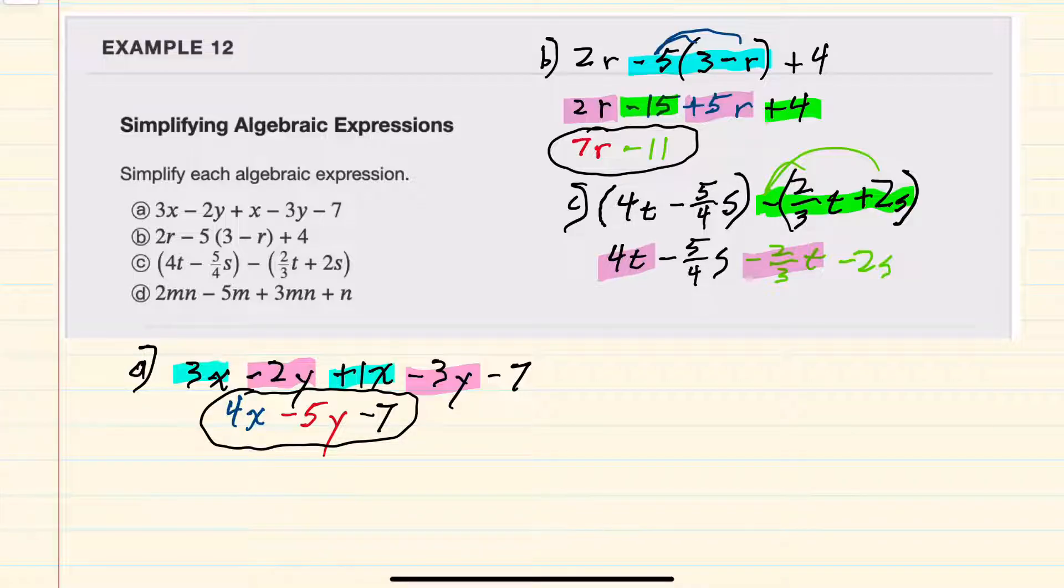And since the only denominator is 3, I can rewrite the 4t as 12t over 3. And then combining like terms, the 12 thirds minus 2 thirds would give us a 10 thirds t.